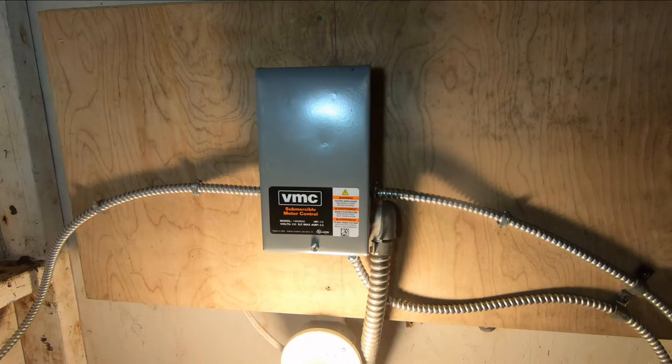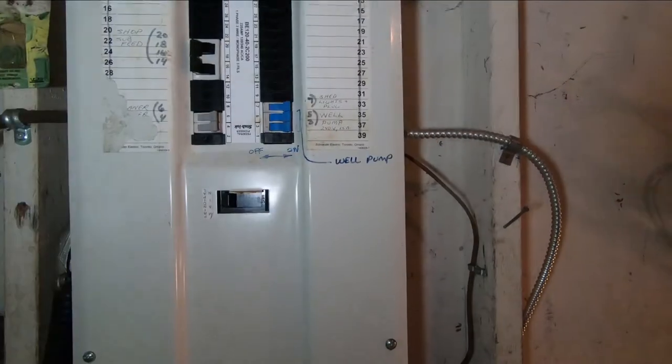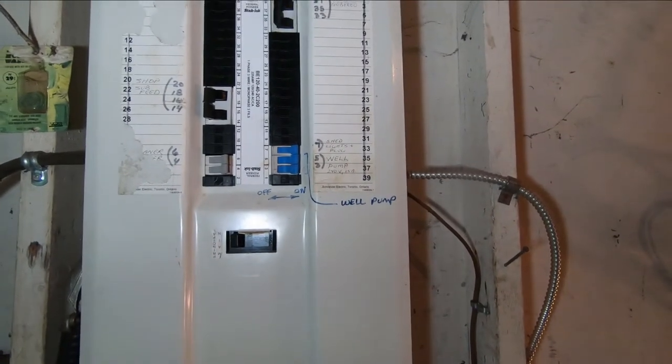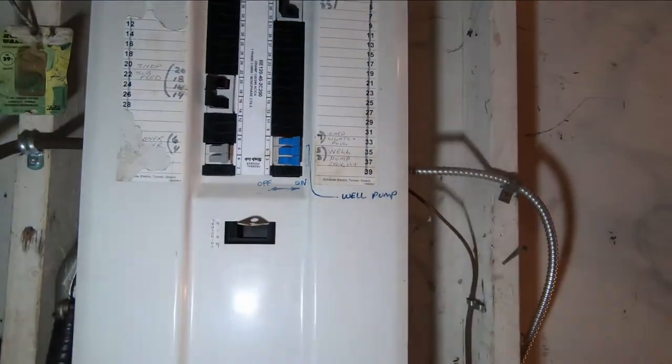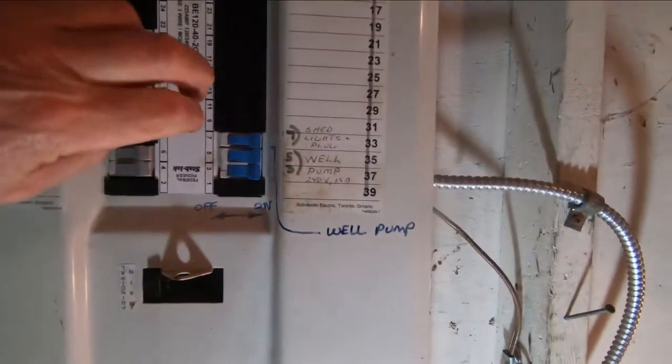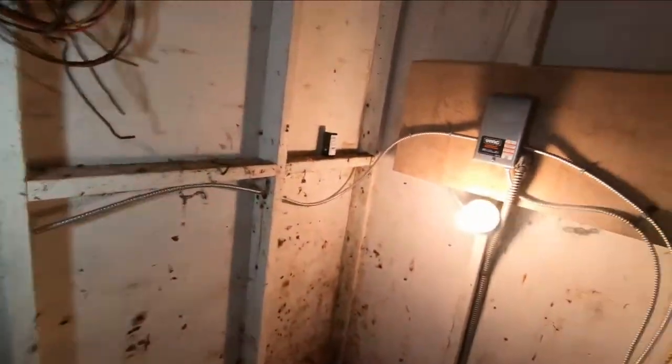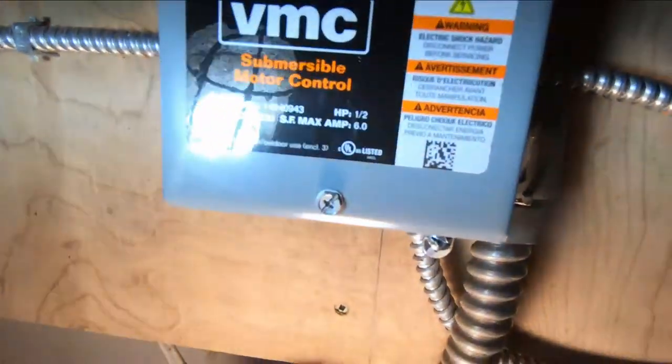I'm back and what we have today is a viewer request to see the routing inside of this control box for the well pump. So the first thing we're going to do is turn off the power to the well pump. Okay, well pump right here, power off. I'm going to take the screw out of that cover.